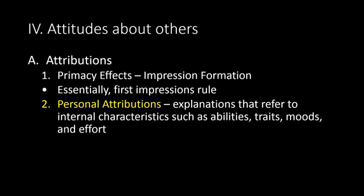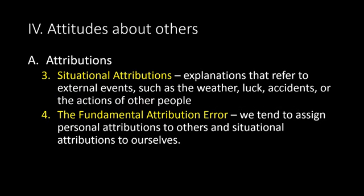Personal attributions are explanations that refer to internal characteristics such as abilities, traits, moods, and effort — things we attribute to a person directly. Situational attributions are explanations that refer to external events such as the weather, luck, accidents, or the actions of other people. For example, missing class because you slipped running to catch a bus and wrenched your hip — that would be a situational attribution, whereas being clumsy would be a personal attribution, and both could actually be true.